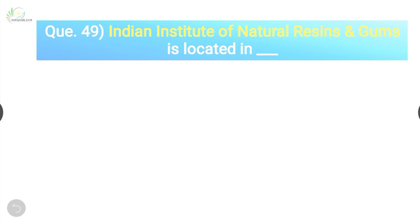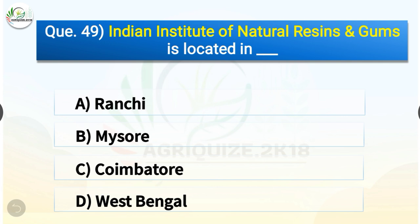Question number forty-nine: Indian Institute of Natural Resins and Gums is located in — options are Ranchi, Mysore, Coimbatore, or West Bengal. The correct answer is option A, Ranchi. The Indian Institute of Natural Resins and Gums is located in Ranchi.